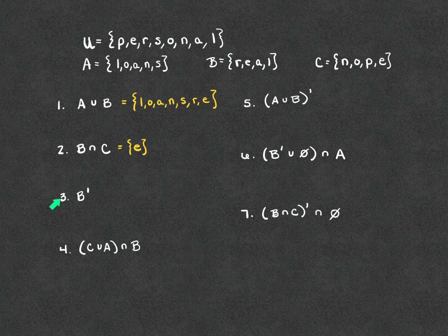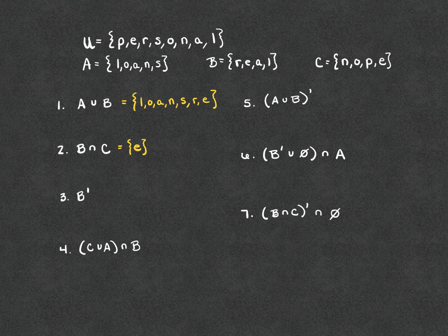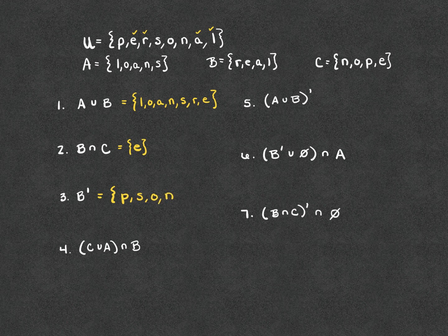For number three, B complement is the letters in the universal set that are not in set B. I'll put a check mark above the letters in set B — R, E, A, L — and write down the unchecked letters. The letters not in set B are P, S, O, N. That is B complement.